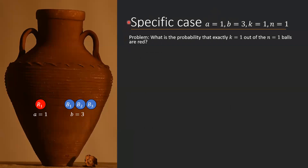Let's solve that question for one specific case where we define all four variables. A is 1 and B is 3 as before, but now we also define that we're going to take one ball out of the urn and we want to know the probability that one out of these one ball is red. So in other words, we take one ball out and we want to know the probability that that ball is red. The answer is fairly obviously 25%, but let's do this calculation in a structured way so we can apply the same structure to more general cases.